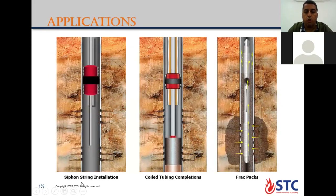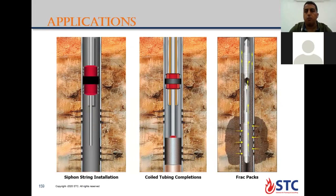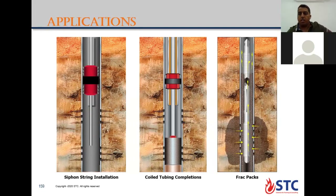This one is called velocity string or siphon string installation. If you have a reservoir producing gas but with high water cut ratio, the water will prevent gas production. That's why we install the velocity string — tubing hung below the safety valve with a packer — then produce from inside the coil tubing string with small diameter to maximize velocity and increase delivery capacity for production.